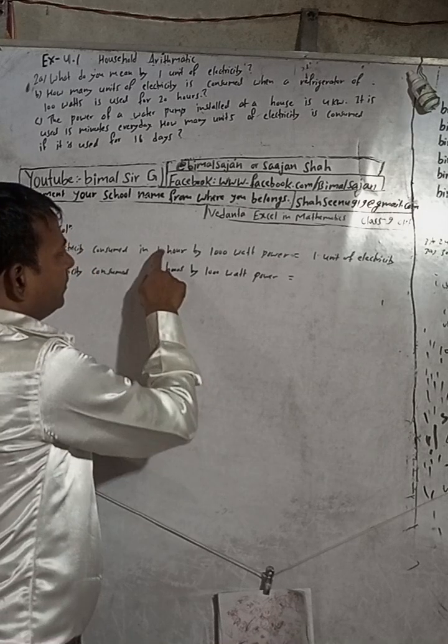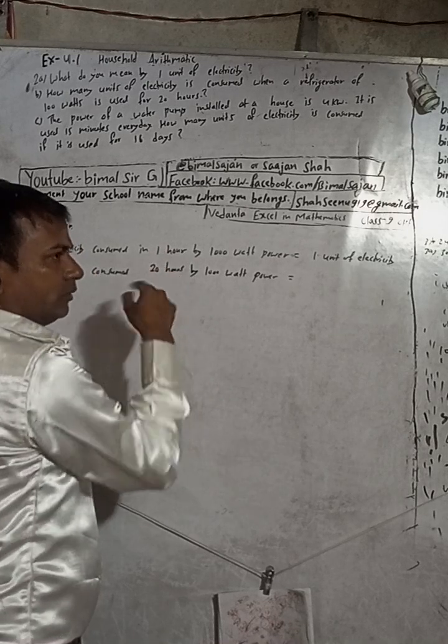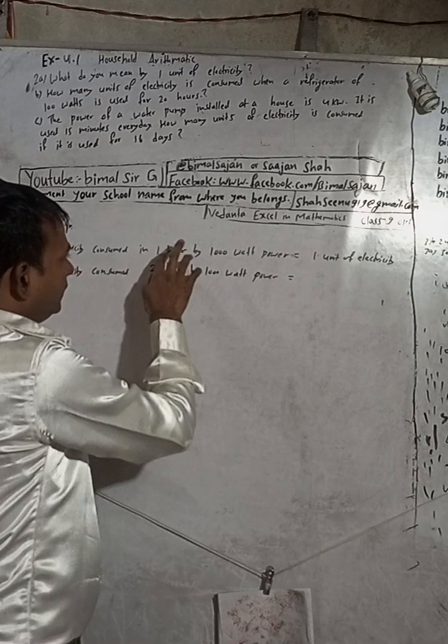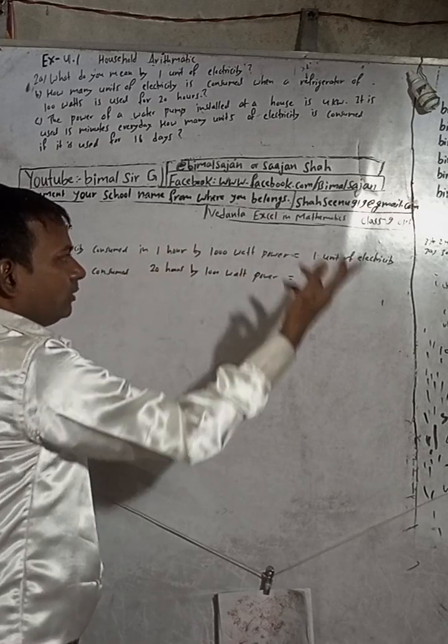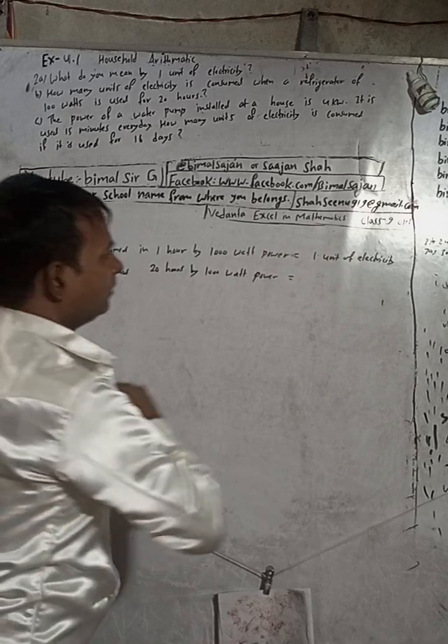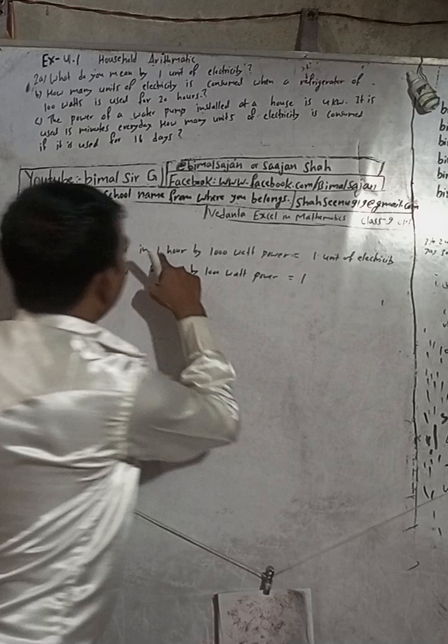If it decreases, then we will divide. But if it increases, then we have to multiply. See that this is one hour, now time increases, so unit will be more. So to make more, M for more, M for multiply. Multiply one into this: 20, so 1 into 20 units of electricity.